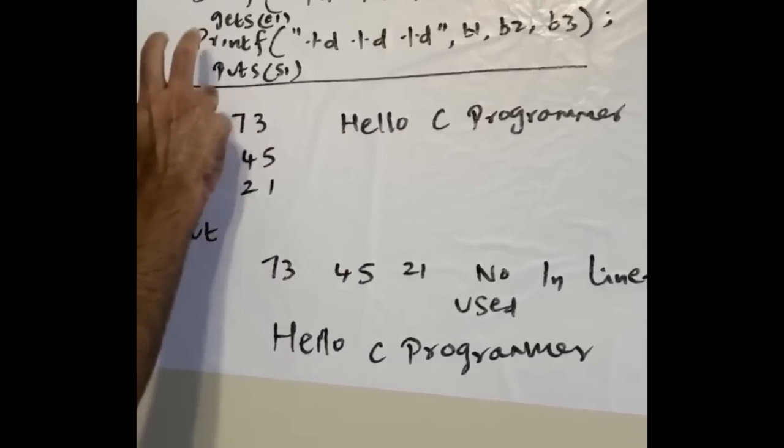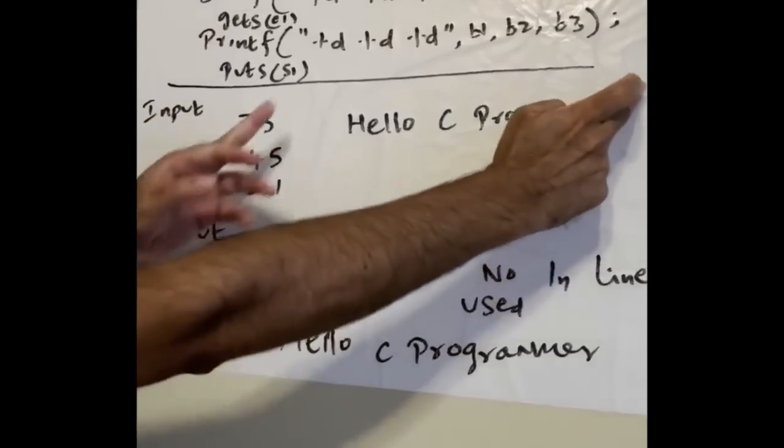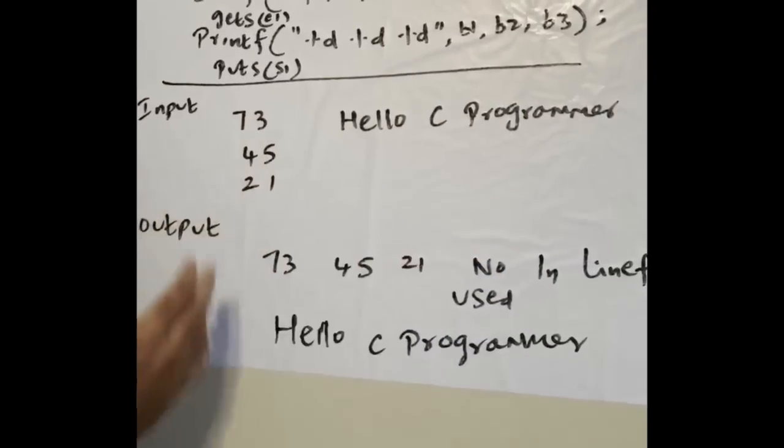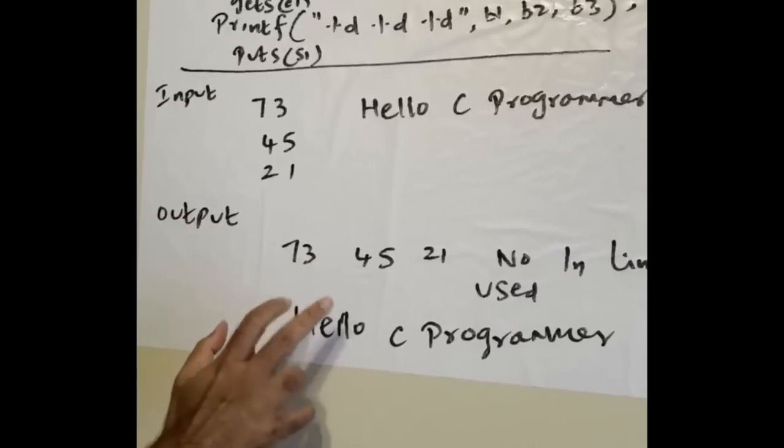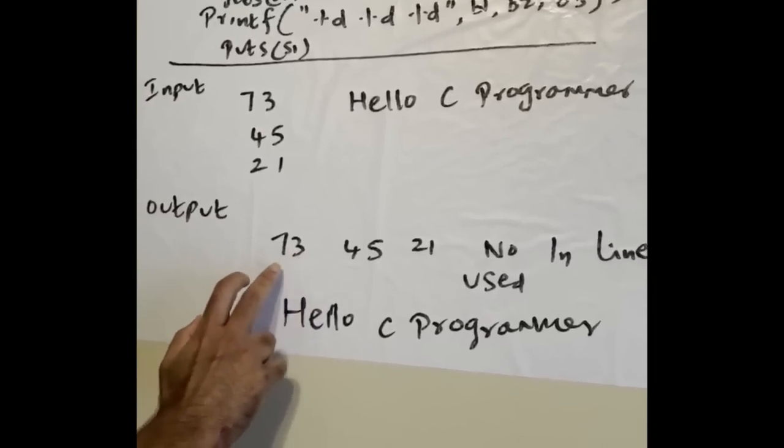Say I put 73, 45, 21 - so b1 is 73, b2 is 45, b3 is 21. In the string I put "Hello C Programmer" - that's the string I'm entering.